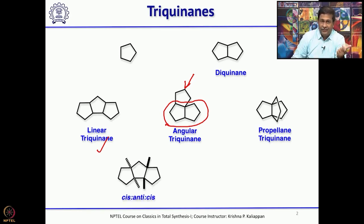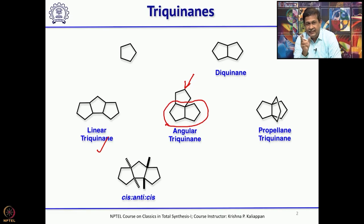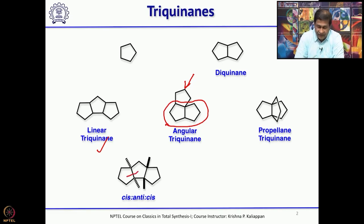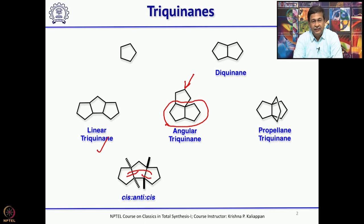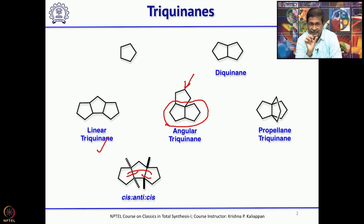When you talk about linear triquinines, there are 2 types. One is cis-anti-cis: the relationship between the first and second rings is cis, the relationship between the first and third ring is anti, and the relationship between the second and third ring is cis — that is why it is called cis-anti-cis.